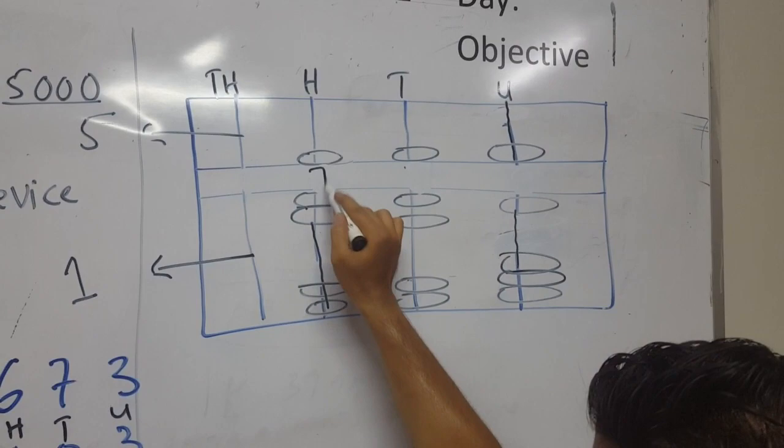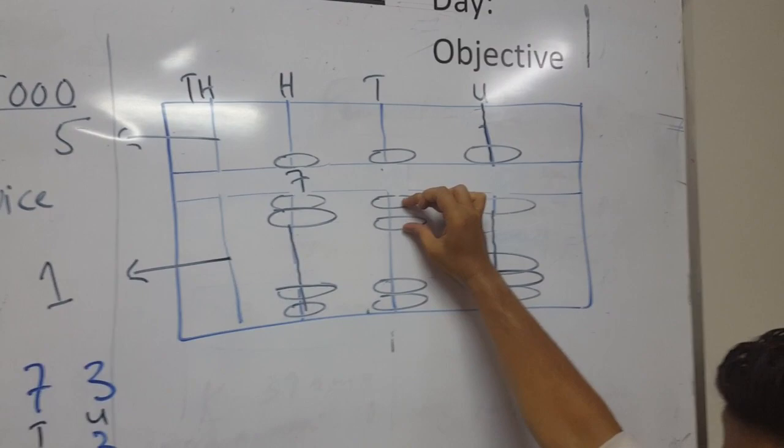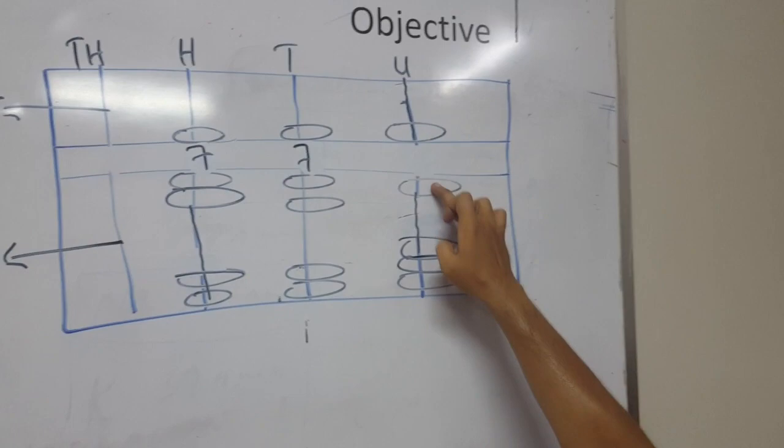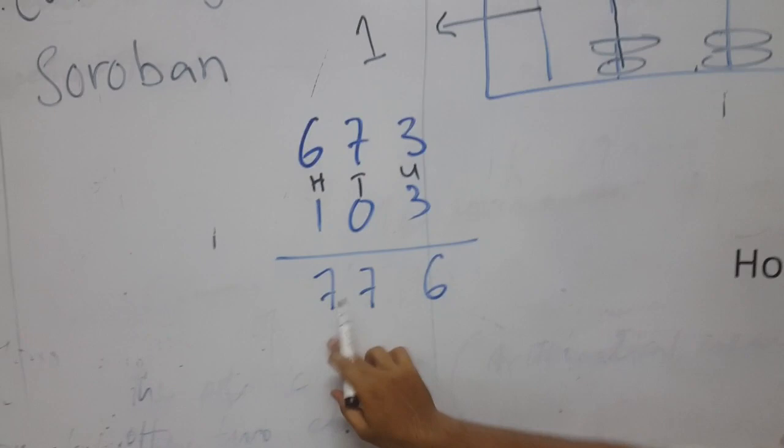When I changed the beads, definitely their power will change. Now let's see what's coming. Here this bead has 5 power and this has 2, so five plus two becomes what? Seven. Second part, we have this 5 and this 2, five plus two become seven. And here one bead which has five power and one which has single power, so five plus one become six. So answer is coming seven seven six, 776.